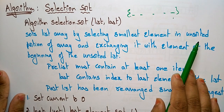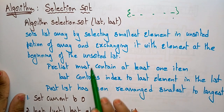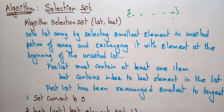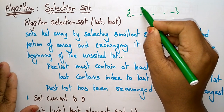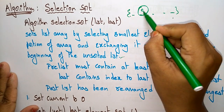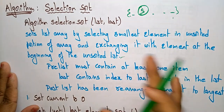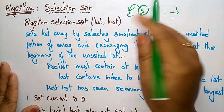Sort the list array by selecting the smallest element in the unsorted portion of the array and exchanging it with the element at the beginning of the unsorted list. Whatever the definition I explained about selection sort is written here — select the smallest element in the unsorted portion and exchange it with the element at the beginning of the unsorted list.